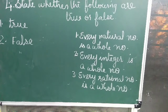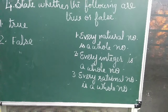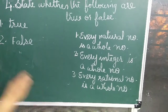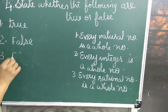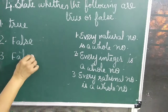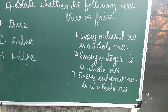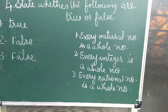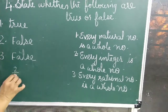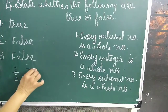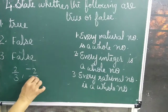Third statement: every rational number is a whole number. Answer: false. Because rational numbers are of the form 2 upon 3, minus 2 upon 3, minus 2 upon 7, and so on, which are not whole numbers.